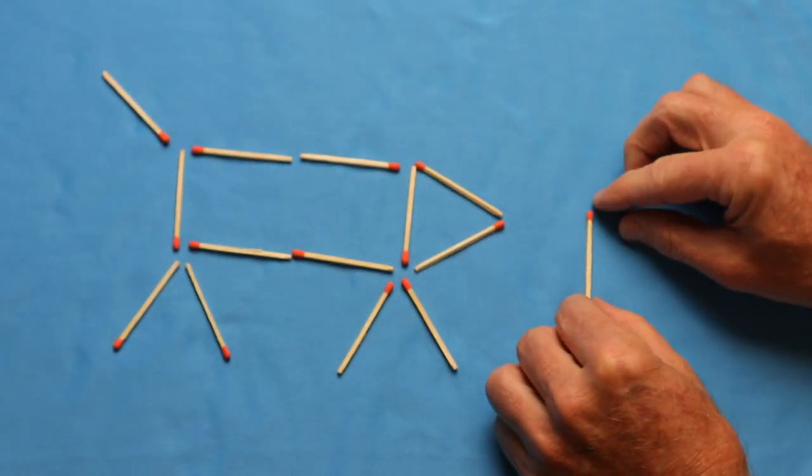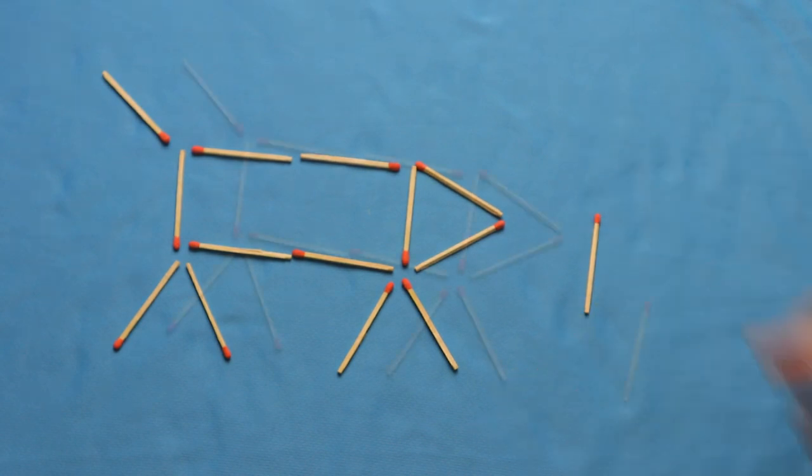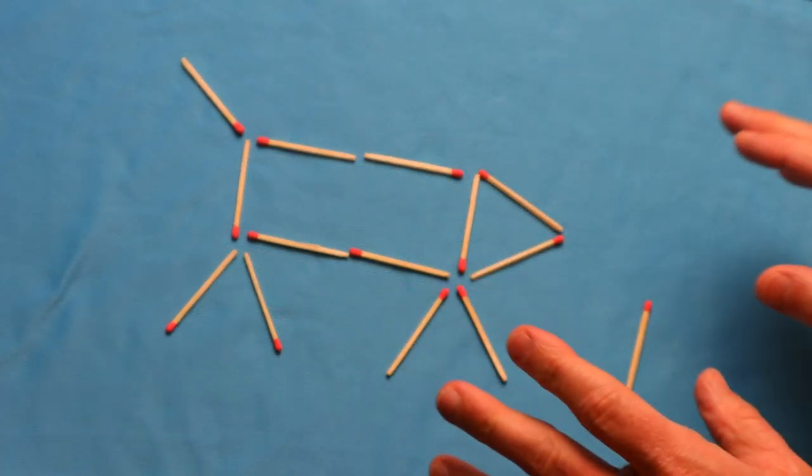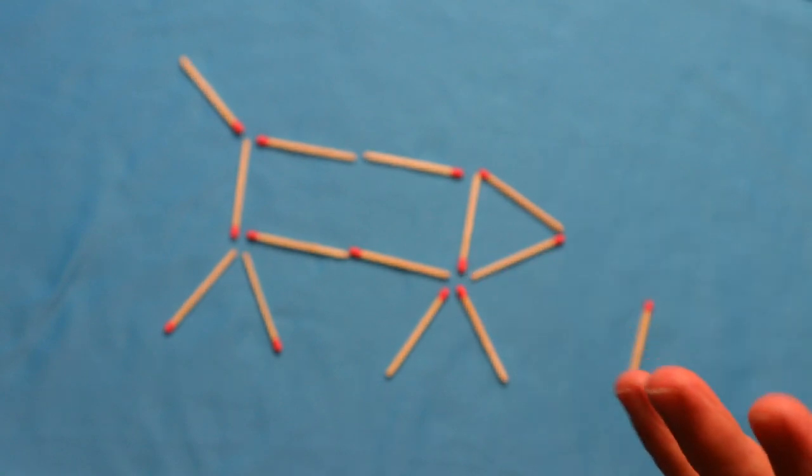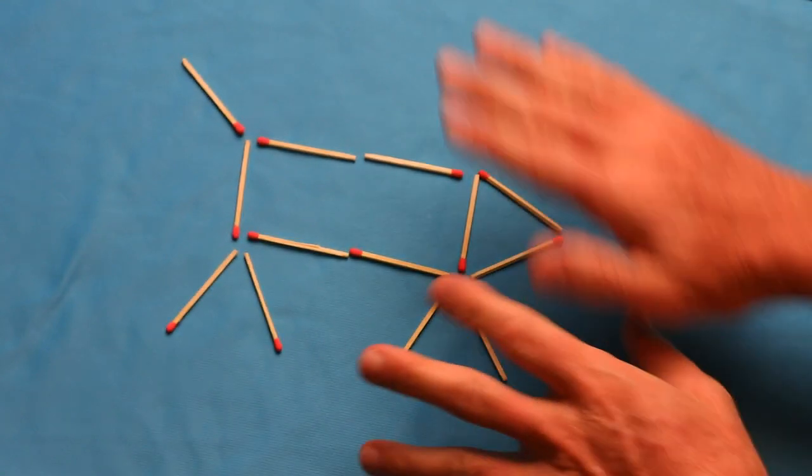And this one right here, the last one goes in front. Okay, so you've got your dog all set up. 14 matches, or whatever it is, straws, toothpicks, Q-tips. Looks like this.